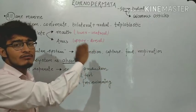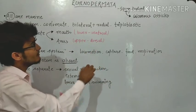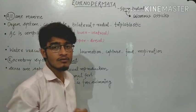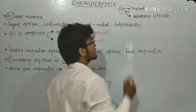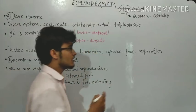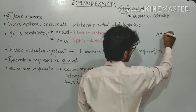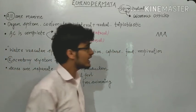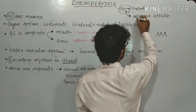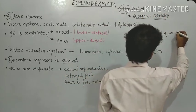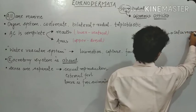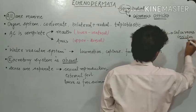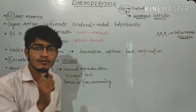As the name indicates, Echinodermata means spiny body. It means that there are different kinds of spines which are present on their body. These spines are commonly made up of calcium, and that's why these are known as calcareous ossicles.